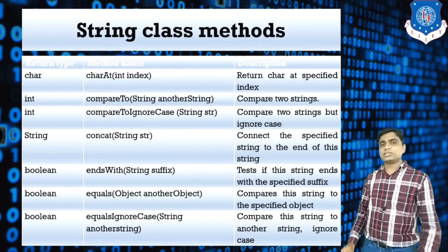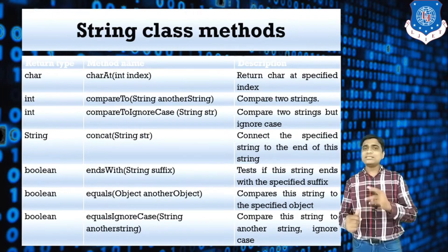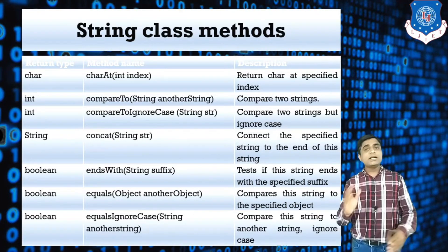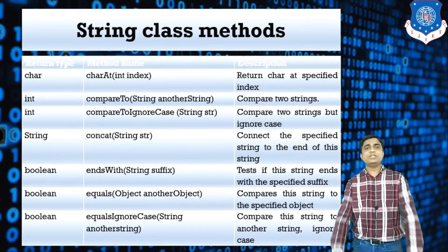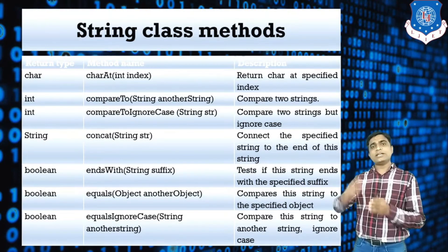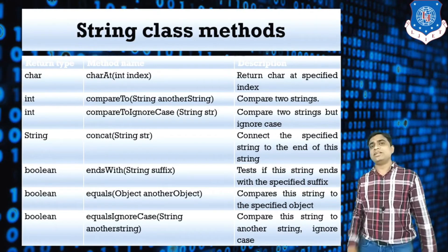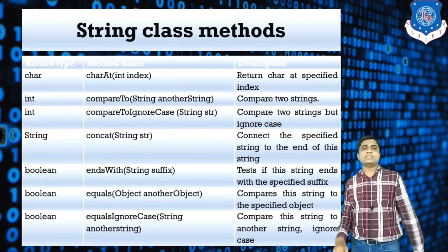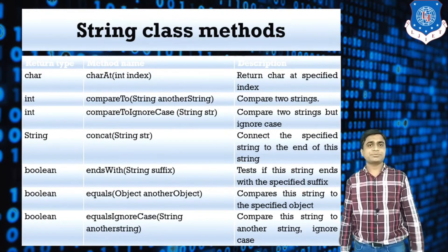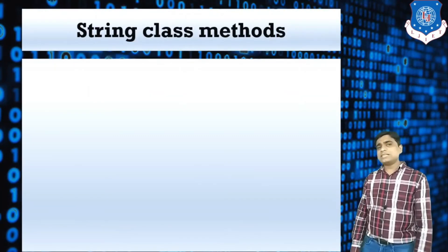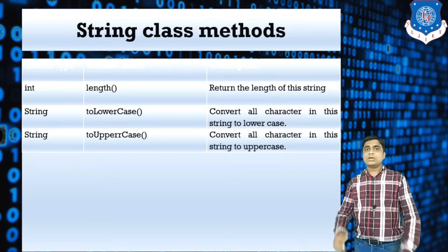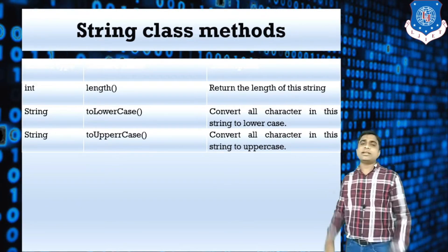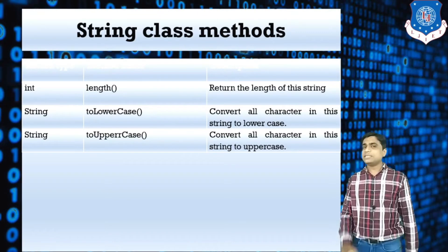The next method is equals, also used for comparison — but what is the difference from compareTo? The equals method returns a boolean value. So if you write s1.equals(s2), this returns true or false, not an integer value. Similarly, equalsIgnoreCase returns a boolean value but ignores case, treating uppercase and lowercase letters as the same.